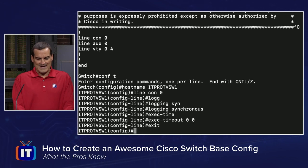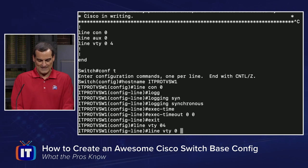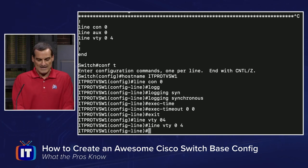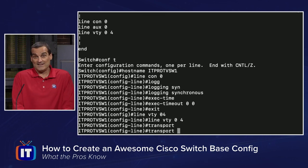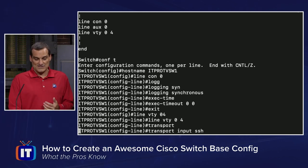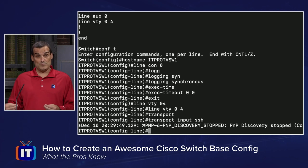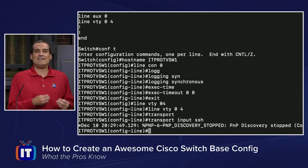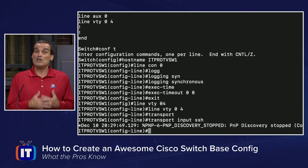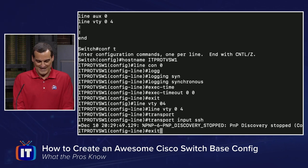Now we'll back out of the console and talk about the virtual terminals. We go to line VTY zero space four to enter those lines. Even in the lab these days, we're going to say the appropriate way to access this device remotely is to use Secure Shell. We use the command 'transport input SSH' to limit incoming connections over those virtual terminal lines to just the Secure Shell protocol. Telnet is clear text and bad, so no Telnet is permitted in that configuration.